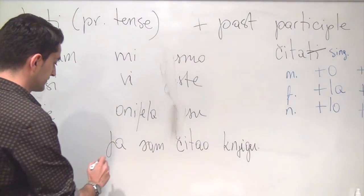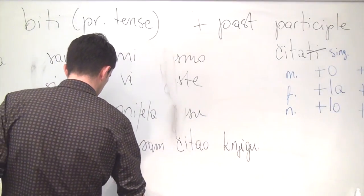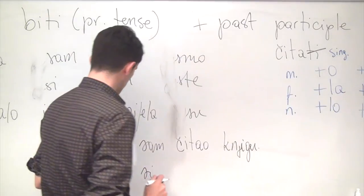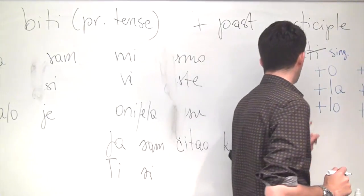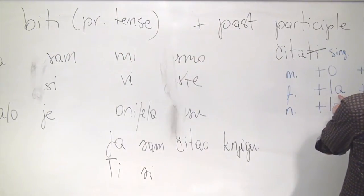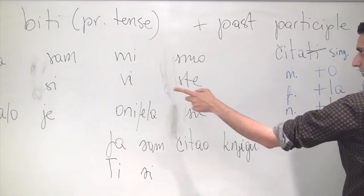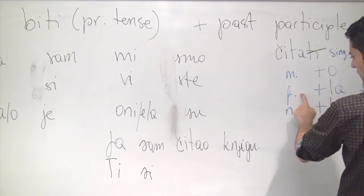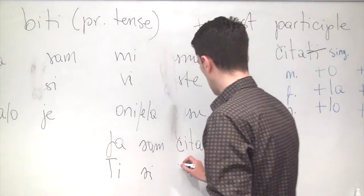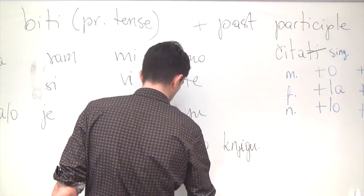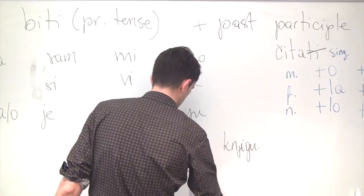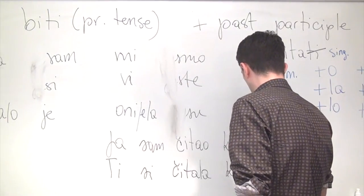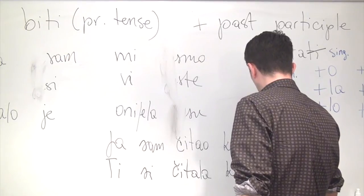Ti, let's write out another example. Ti si, and let's say that the subject here, the grammatical subject is female, we use the feminine suffix in singular, because ti is second person singular. So, singular, feminine, čitala knjigu. You were reading a book.